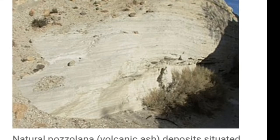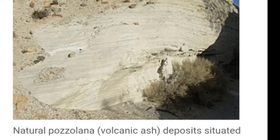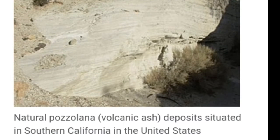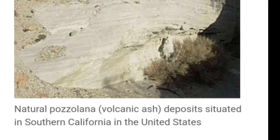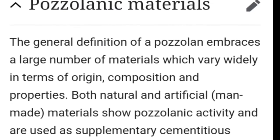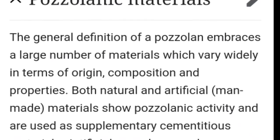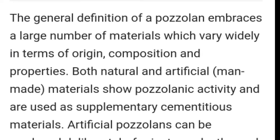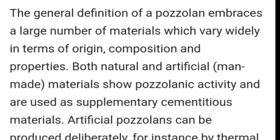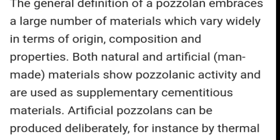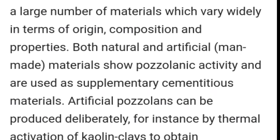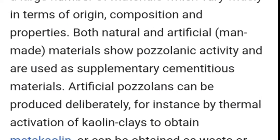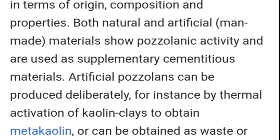Natural pozzolana यानी volcanic ash को आप इस figure में देख सकते हैं. The general definition of pozzolana embraces a large number of materials which vary widely in terms of origin, composition and properties. Both natural and artificial materials show pozzolanic activity and are used as supplementary cementitious materials.